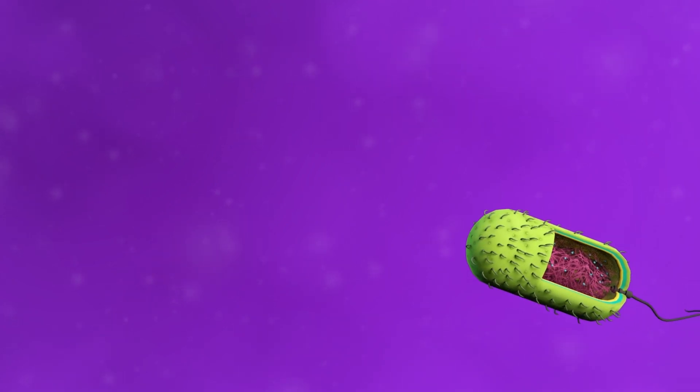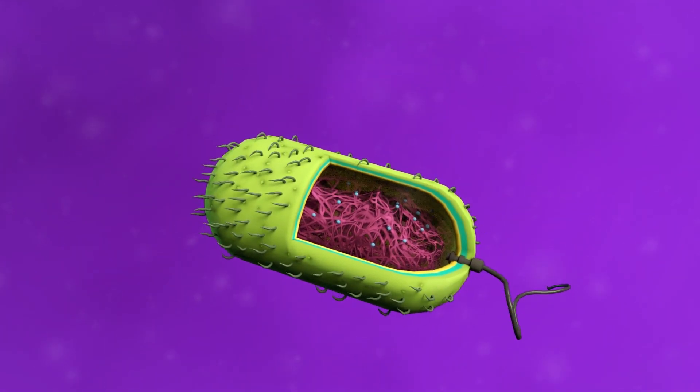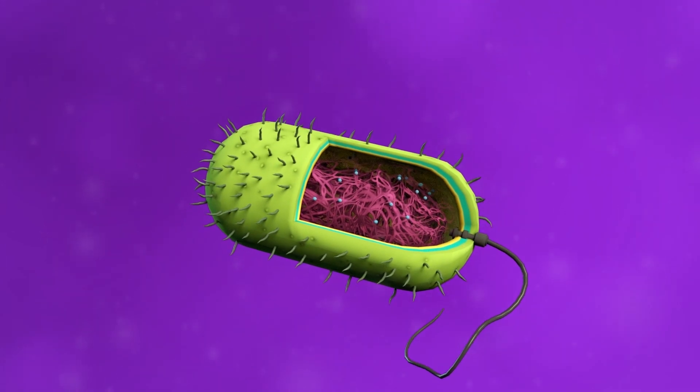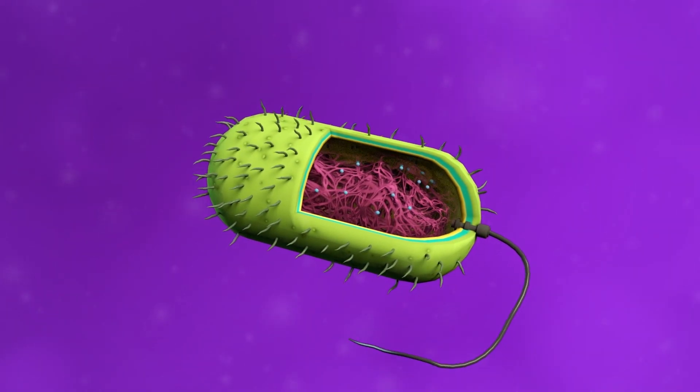The main characteristic of prokaryotic cells is that DNA, the genetic material, is floating in the cytoplasm instead of being stored in the nucleus.